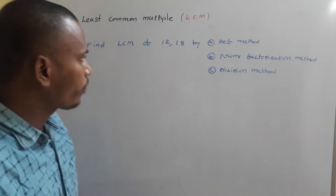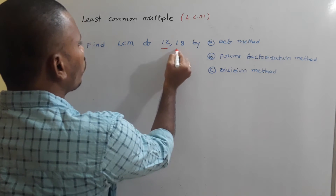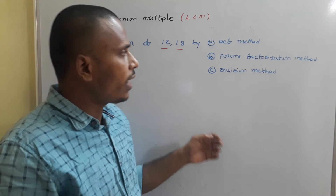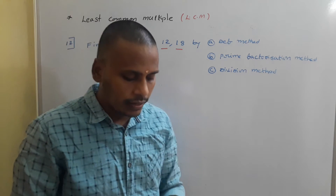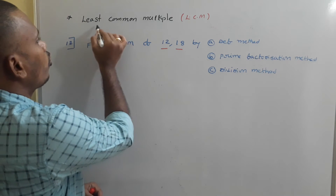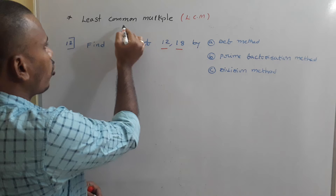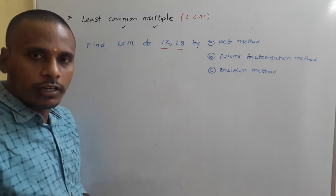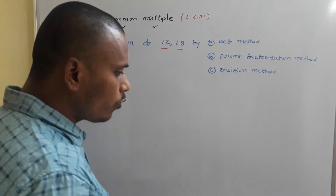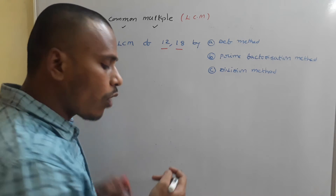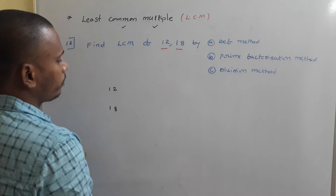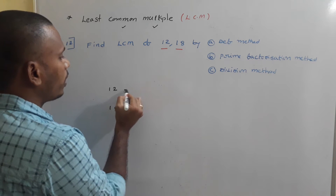We have two numbers 12 and 18 and we need to find the LCM by definition method, by prime factorization method, and by the division method. By definition method, we need to follow the words: least common multiple. We list out multiples, identify common multiples, and find the least one. For 12, what are the multiples of 12?